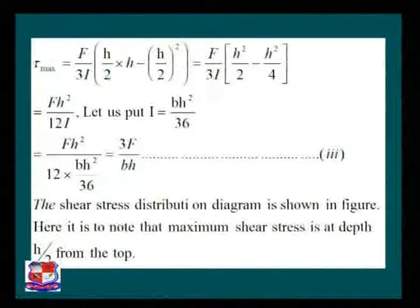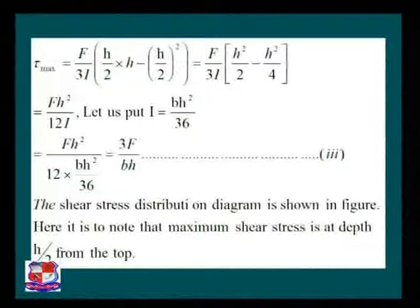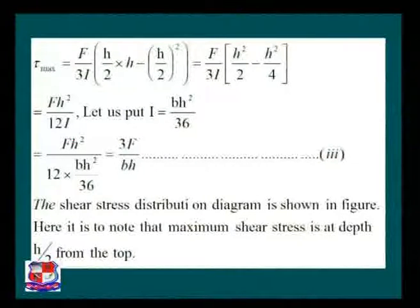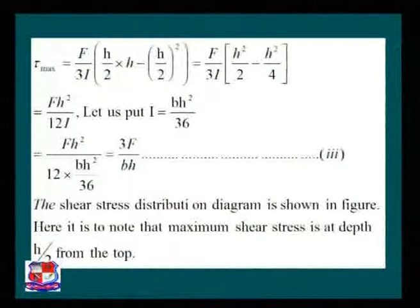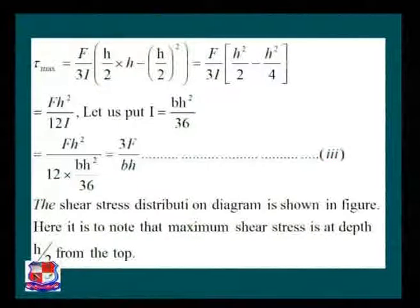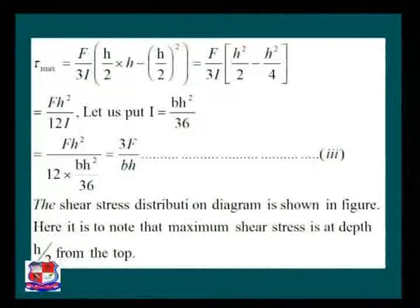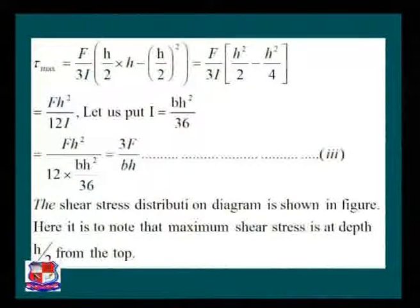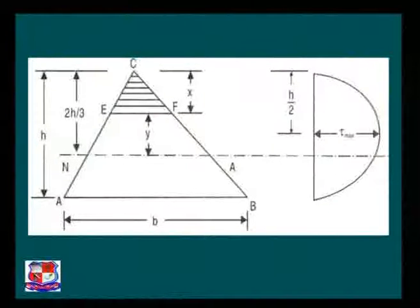Substituting X = H/2 into the equation and simplifying, we get F·H²/(12I). Putting I = BH³/36 (moment of inertia of a triangular section about the neutral axis), we find tau_max = 3F/(BH).